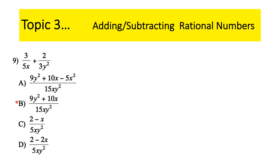Topic three — adding and subtracting fractions. Our fractions now have a mixture of variables and coefficients. No different than adding 1/2 plus 1/3 — you have to get a common denominator. Look at the coefficients in the denominators: 5 and 3, so the common denominator coefficient is 15. Then take all variables to their highest power — there's an x to the first and a y squared, so the LCD is 15xy².